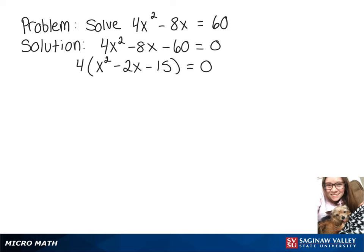So factoring what's in parentheses, we need to think of two numbers that multiply to get negative 15 and add to get negative 2. So we can use negative 5 and positive 3.